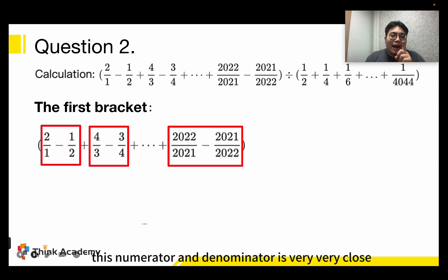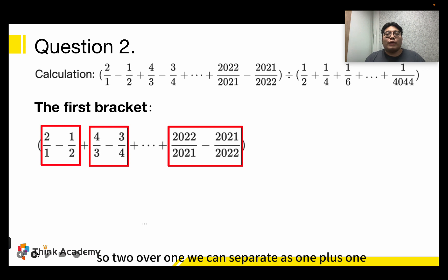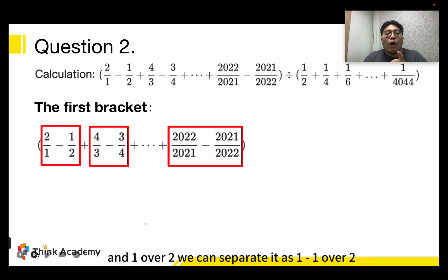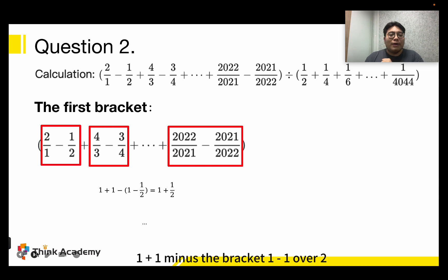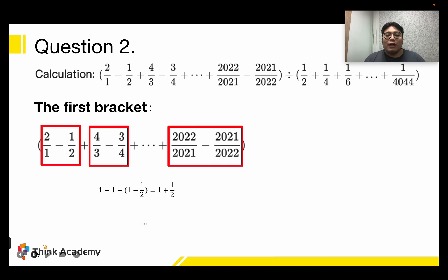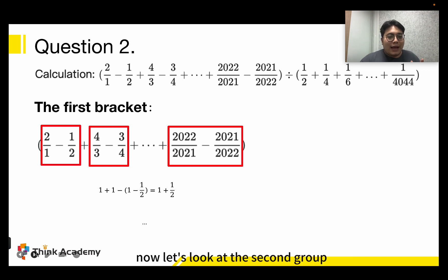Now let's look at the first group. The numerator and denominator are very close — the difference is only 1. So 2 over 1 can be written as 1 plus 1, and 1 over 2 can be written as 1 minus 1 over 2. So the first group becomes (1 + 1) minus (1 − 1/2). When we open the bracket, 1 minus 1 equals 0, so the answer is 1 plus 1 over 2.